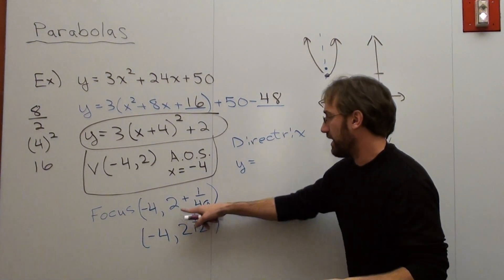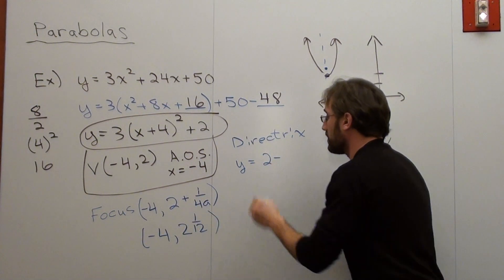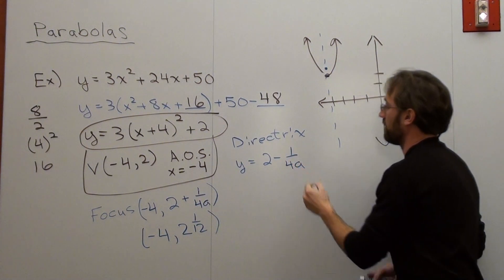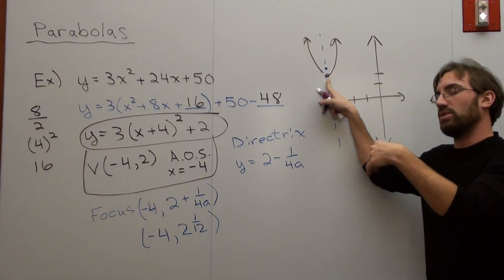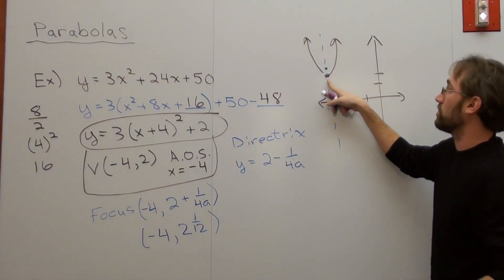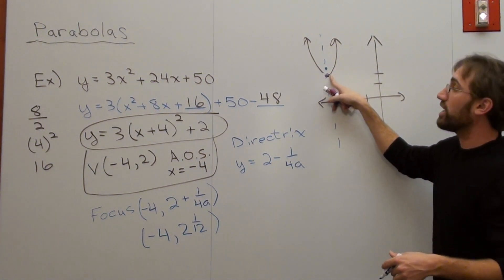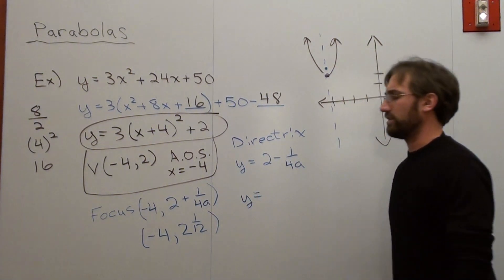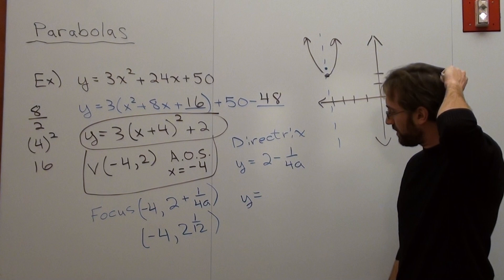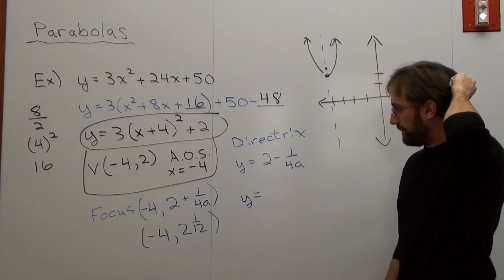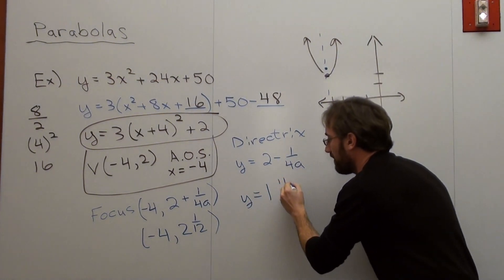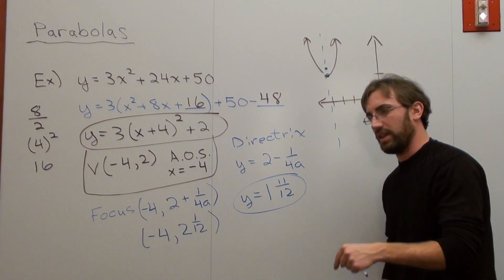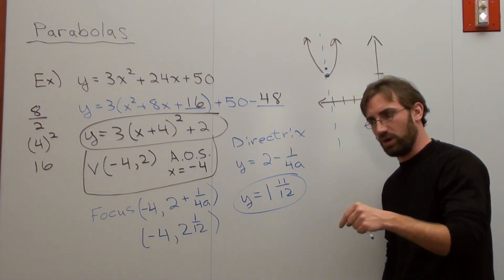And what it is, is my k value subtracted by 1 over 4a. See, the vertex is the k value. Well, the y point for the vertex is the k value. The focus is an additional 1 over 4a. The directrix is going to be minus 1 over 4a. So that's going to be at 2 minus 1 twelfth is 1 and 11 twelfths. That's 1.916 repeating.